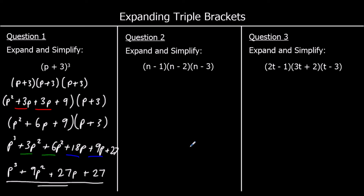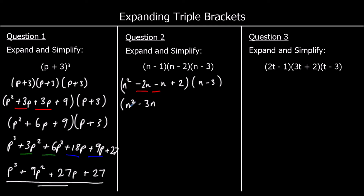Question 2. I'm going to expand and simplify the first two: (n - 1)(n - 2). Then multiply that by the third bracket, (n - 3). So the first two: n times n is n squared. n times negative 2 is negative 2n. Negative 1 times n is negative n. And negative 1 times negative 2 is positive 2. And I've still got the last bracket on the end. Collecting like terms: negative 2n take away another n is negative 3n. So n squared minus 3n plus 2 in the first bracket, and (n - 3) in the second bracket.